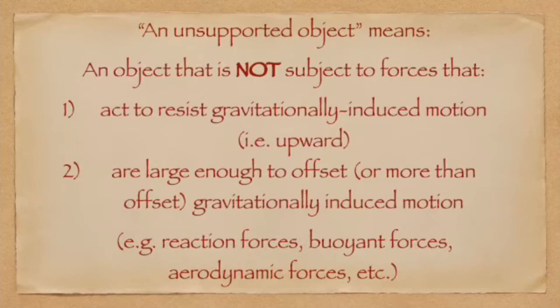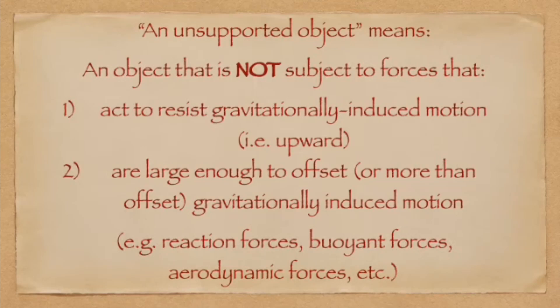Before we go any further, I need to define a particular term I'm going to be using a lot during this video. An unsupported object is an object that is not subject to any upward forces that are large enough to offset or more than offset gravitational influence. To address a favorite Flurf example, helium balloons in Earth's atmosphere are not unsupported — they are subject to an upward buoyancy force. They are supported by the atmosphere. Conversely, helium balloons in evacuated vacuum chambers fall because they are unsupported until they hit the bottom of the chamber.